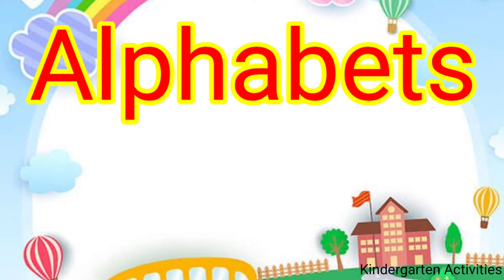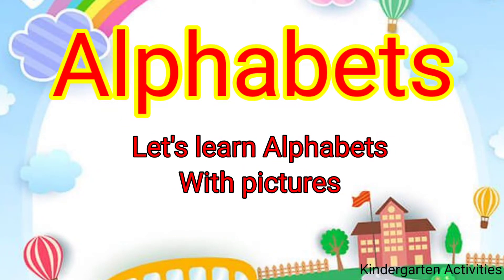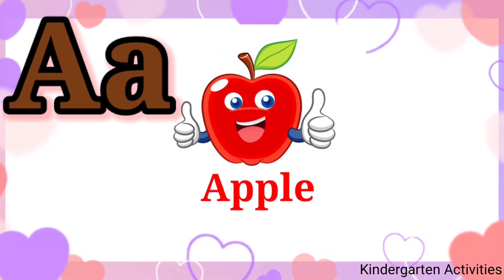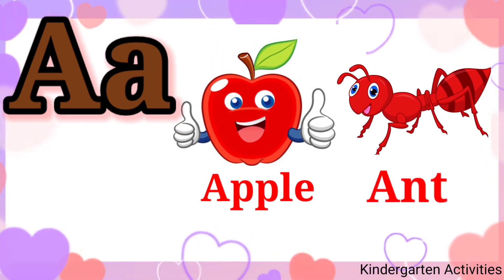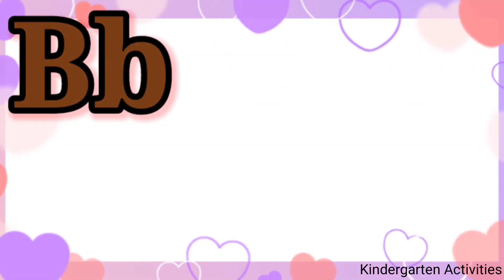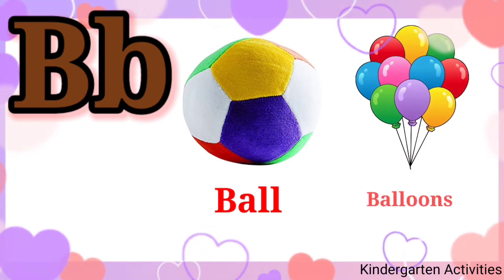Hi kids, how are you? I hope you all are fine. Now come, let's learn the alphabet A to Z with two words each. Let's start! A for apple, A for ant. B for ball, B for balloons.